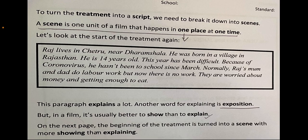There is a story in your work pack called 'Raj's Stay.' From that story I've extracted the first paragraph: 'Raj lives in Chatru near Dharamsala. He was born in a village in Rajasthan. He is 14 years old. This year has been difficult because of coronavirus. He hasn't been to school since March. Normally Raj's mom and dad do labor work but now there is no work. They are worried about money and getting enough to eat.' This paragraph is explaining us a lot — we call that exposition.